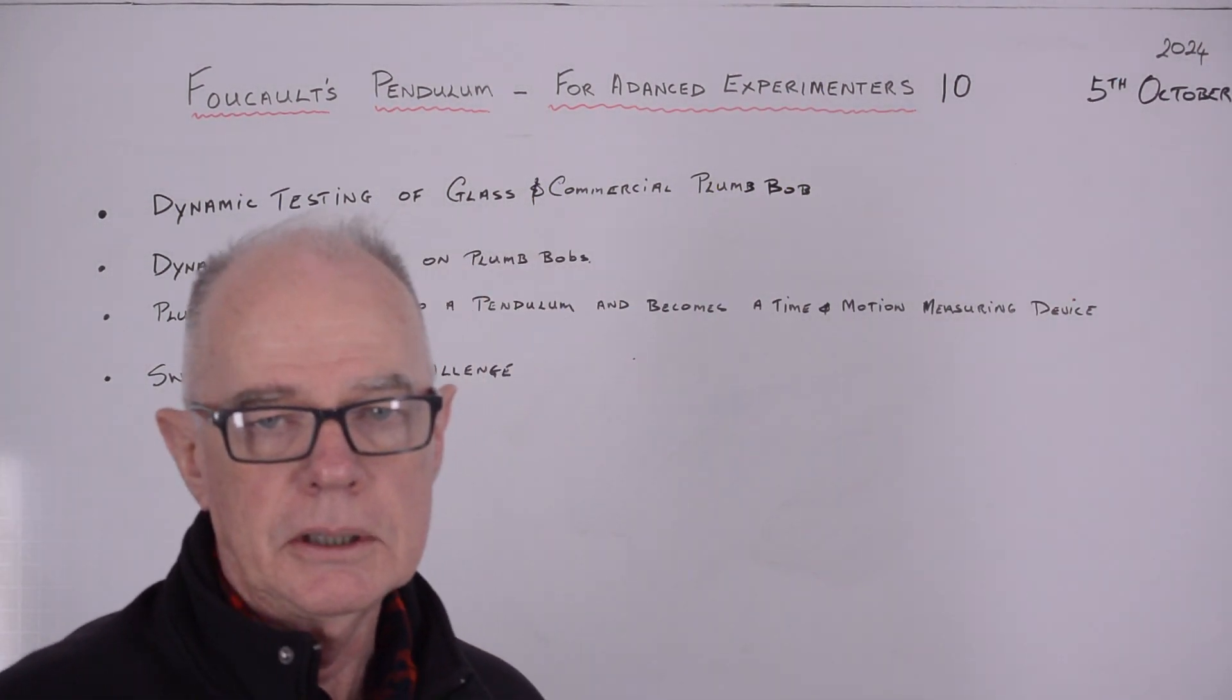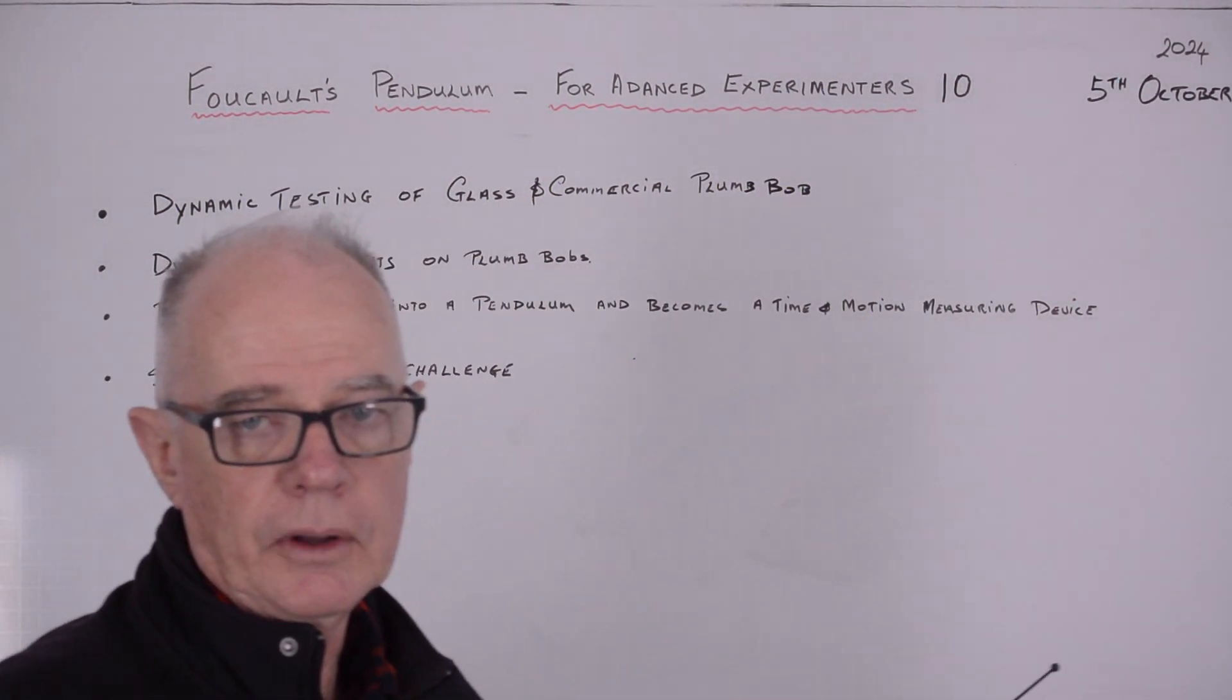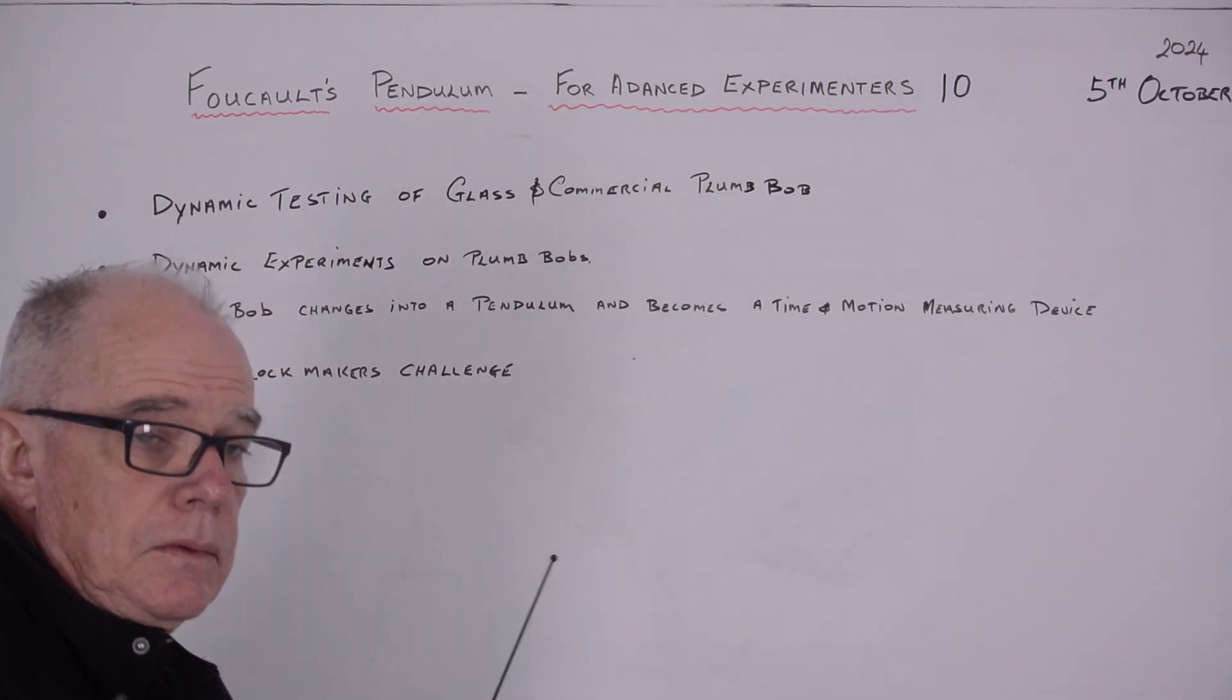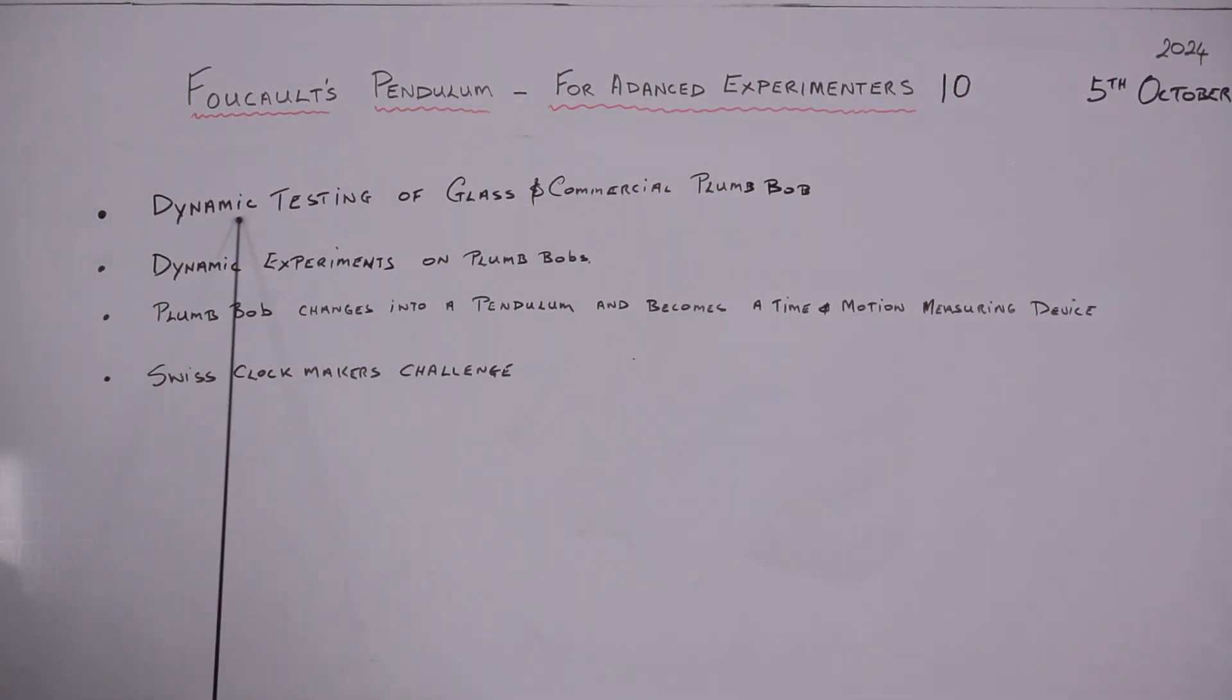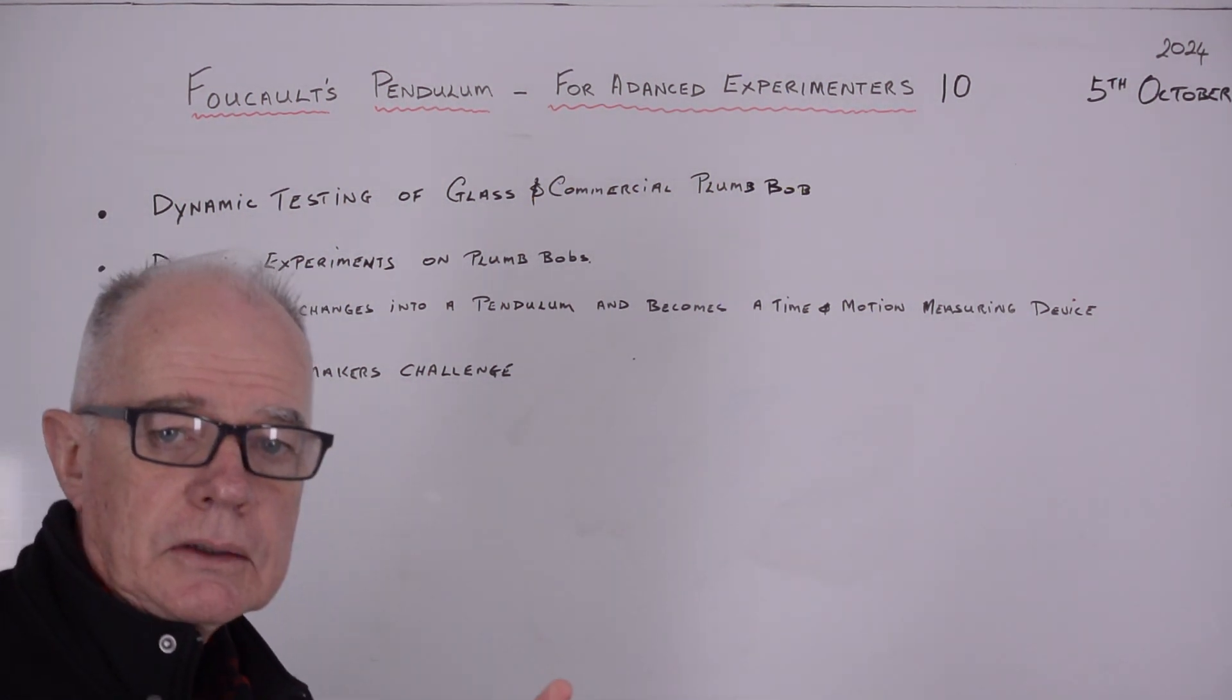Hello and welcome to video number 10 of the Foucault's Pendulum for Advanced Experimenters. Today's video will be looking at the dynamic testing of our glass and our commercially purchased plumb bob. They're the two plumb bobs you have seen in the last video.